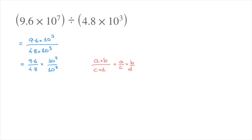Now let's take care of the first fraction. We have 9.6 over 4.8, which is the same thing as 9.6 divided by 4.8. You can go ahead and check, but that's equal to 2. So we have 2 times 10 to the power of 7 over 10 to the power of 3.